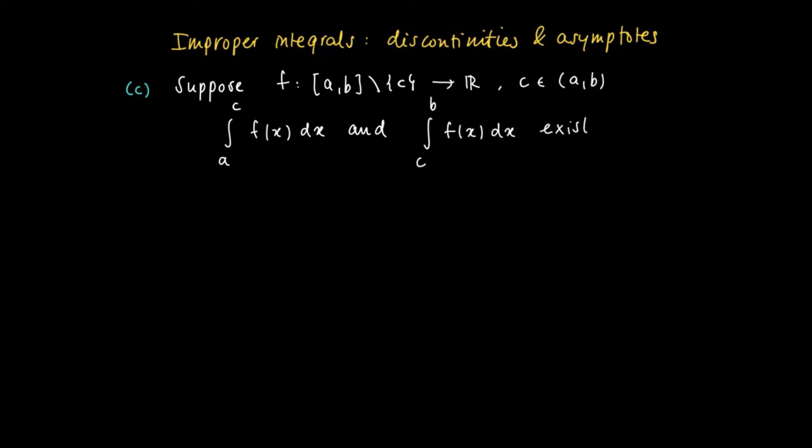Then we want to define the integral from a to b f(x) dx as the sum of those. So the integral from a to b f(x) dx is an improper integral of type c, and we define it to be the sum of the integral from a to c f(x) dx plus the integral from c to b f(x) dx.